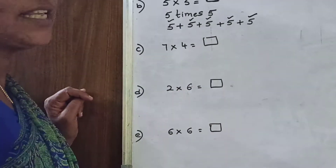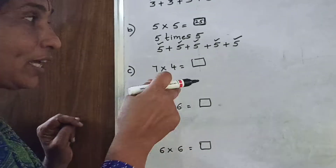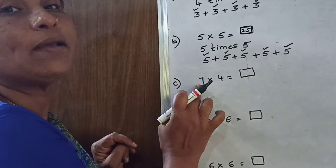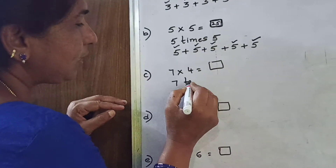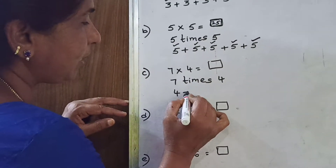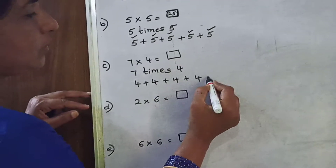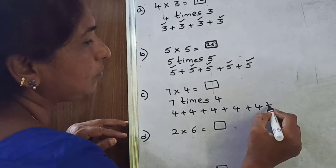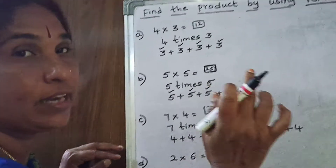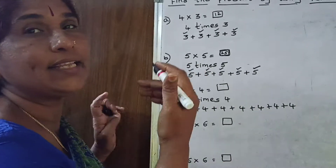Now coming to the third one: 7 fours are. 7 fours are 28 if you know the table. But here you have to find the product by doing repeated addition. So you have to take 7 times 4 — 7 times 4. So: 1 time plus 2 times plus 3 times plus 4 times plus 5 times plus 6 times plus 7 times. You have to take 4 seven times and then do addition.